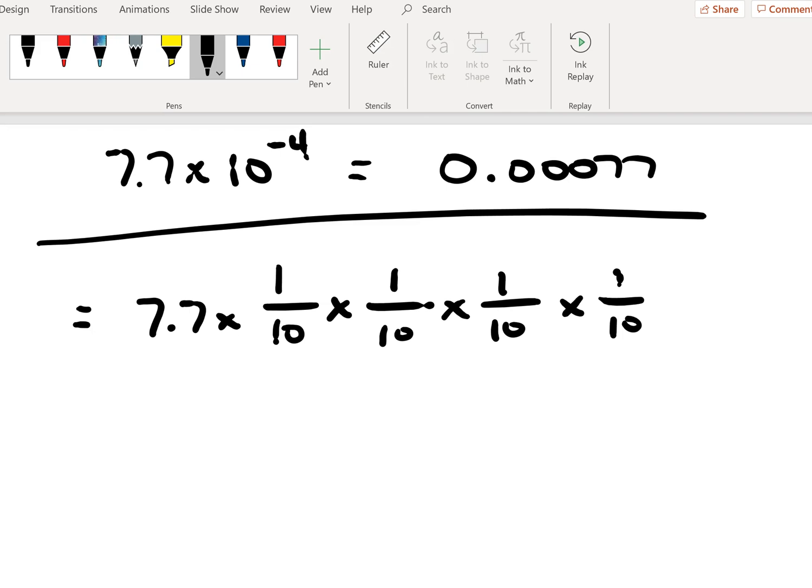We will do this by first doing a similar expansion to the one we did with positive exponents, and this one here comes from the fact that 10 to the minus 4 is equal to 1 over 10 to the 4th, which is 1 over 10 times 1 over 10 times 1 over 10 times 1 over 10.